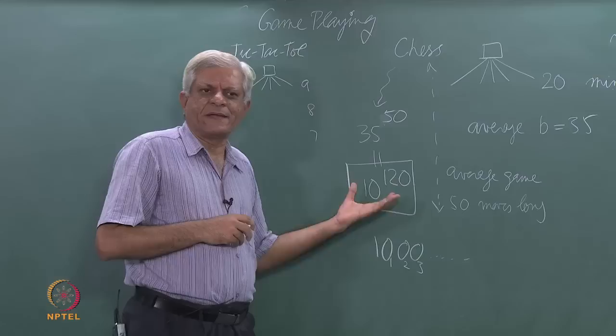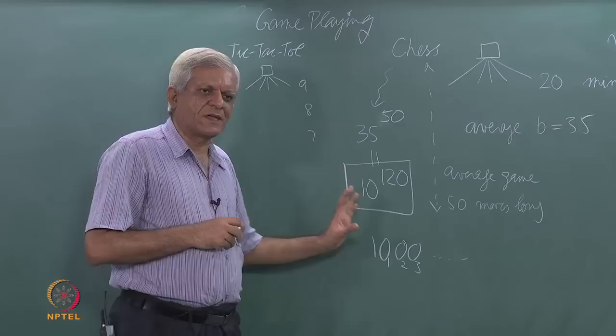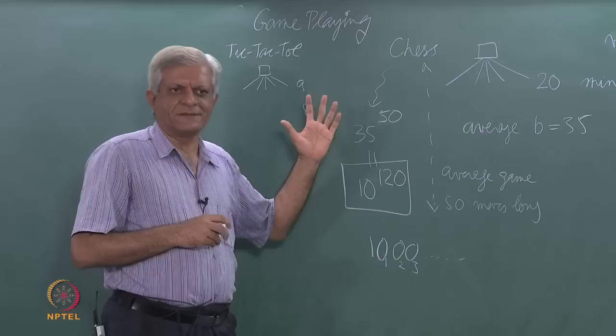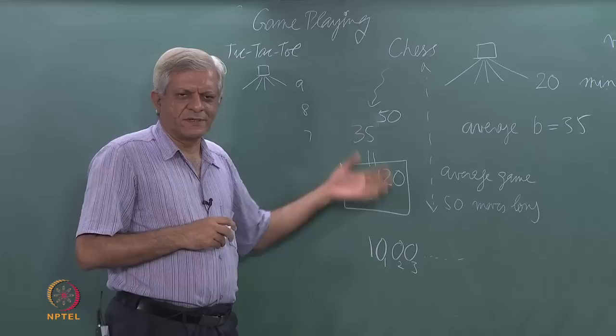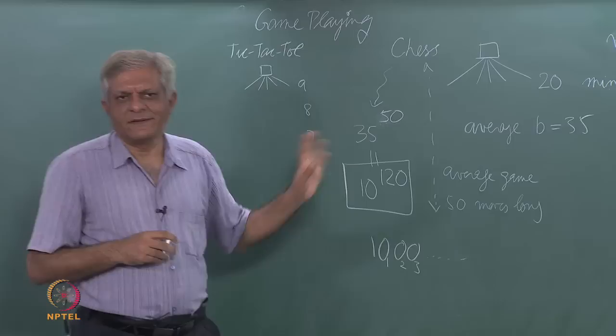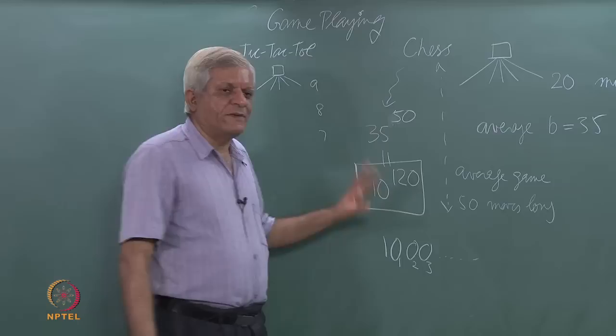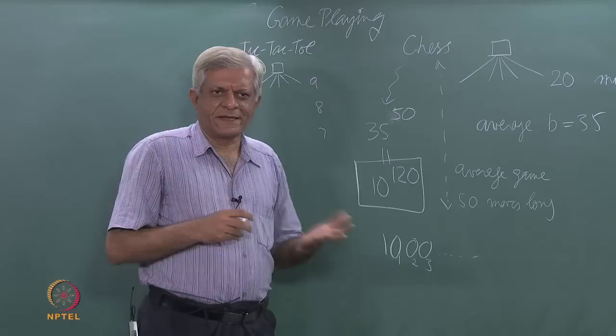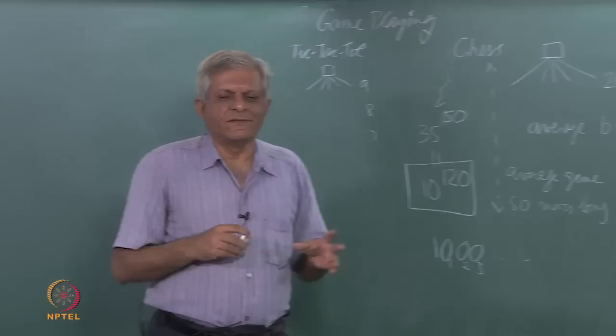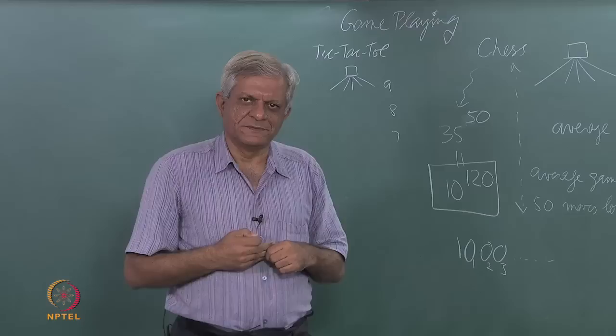Chess is practically impossible. If you remember, 10 raised to 75 is the number of fundamental particles in the universe. And if each of them was a supercomputer, you can do that argument again and see that you cannot solve the game at all. So we do not know whether white will always win in chess or not, which is why the game is still interesting — as opposed to tic-tac-toe, which we do not want to play because we know it is always a drawn game.